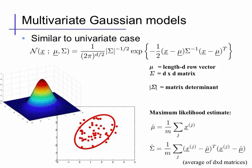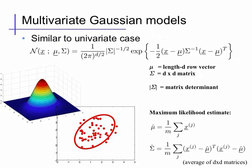The maximum-likelihood estimators are quite similar to the univariate case. The mean vector mu will be the empirical average of the data vectors x — since mu is the same size as x, we just average the vectors. The covariance matrix sigma will also be an empirical average: we center the data by removing the empirical mean, and then average the outer product x minus mu transpose times x minus mu. The x minus mu transpose is a column vector and x minus mu is a row vector, so their outer product is a d-by-d matrix. Averaging those over all the data gives us the empirical covariance matrix sigma.